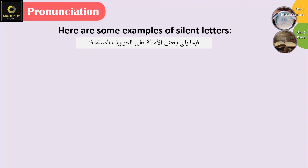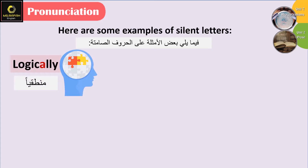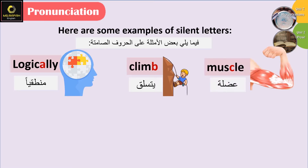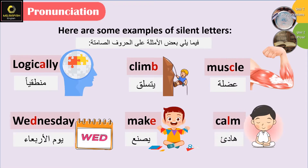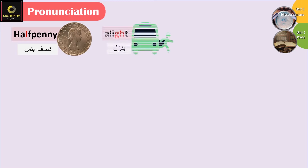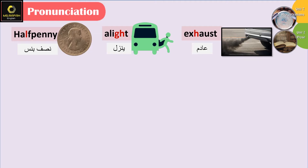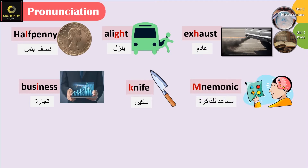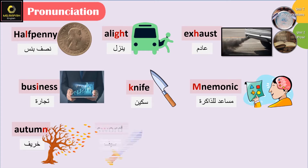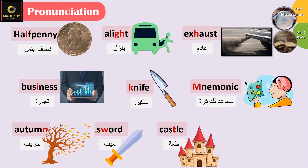Here are some examples of silent letters: Logically, Climb, Muscle, Wednesday, Make, Calm, Have, Penny, A light, Exhaust, Business, Knife, Mnemonic, Autumn, Sword, Castle, Colleague.